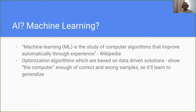AI, machine learning — buzzwords. So what is machine learning? If we go through the Wikipedia definition, machine learning is a study of computer algorithms that improve automatically through experience.